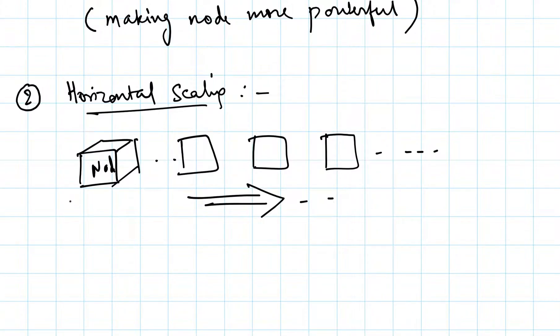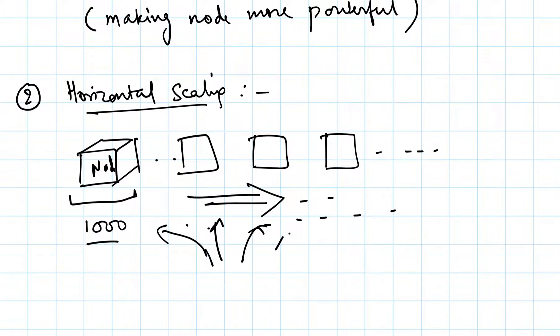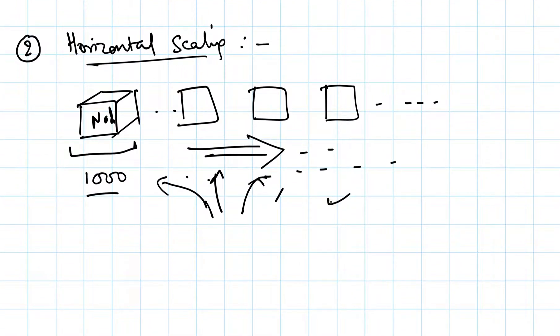If one computer was able to process, let's say, a thousand requests per second, now with more number of computers we can distribute the incoming requests to different computers and they can serve different clients. This method is more scalable - when the number of requests increase further, we can add more nodes and just route some of our requests to that new node.